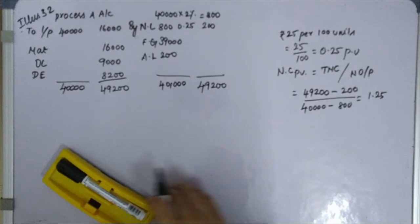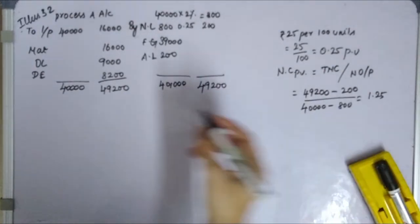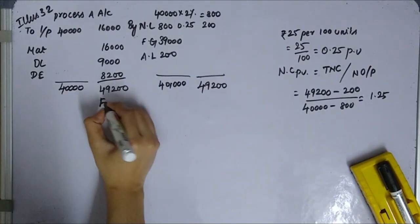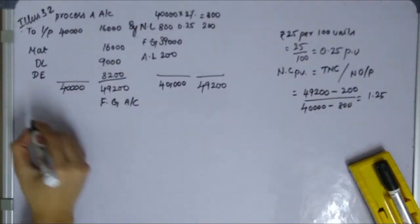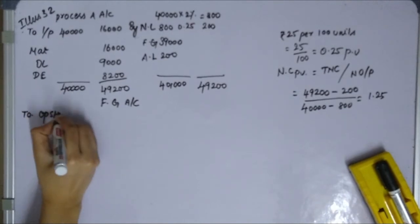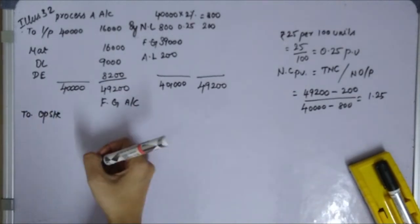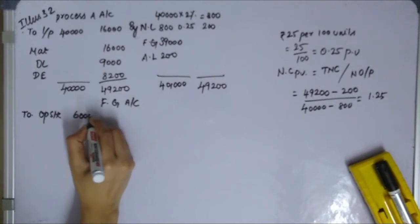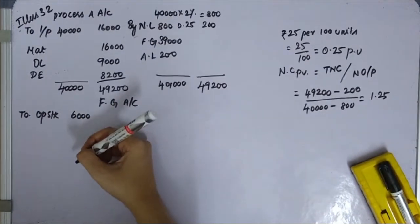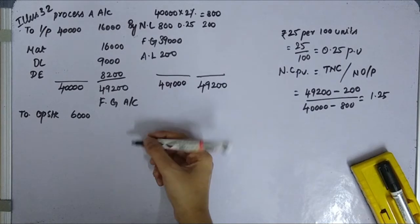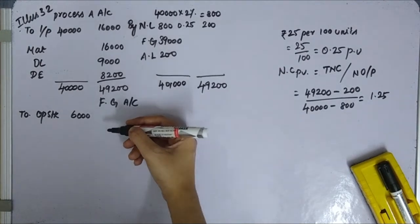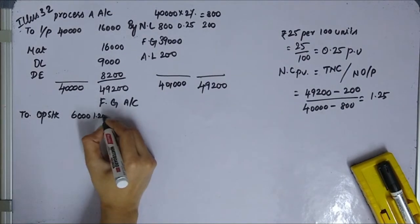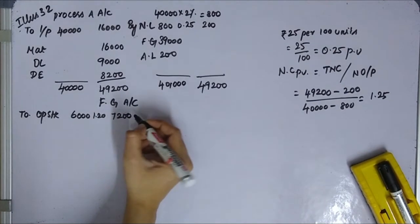Now we prepare the Finished Goods account for Process A. Opening stock on April 1st is 6,000 units. The value of stock per unit on April 1st is 1.20 rupees. So opening stock value is 6,000 multiplied by 1.20, giving 7,200 rupees.